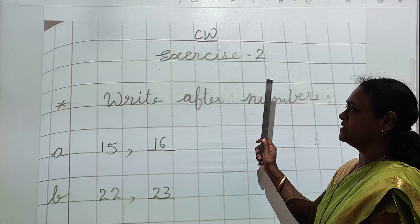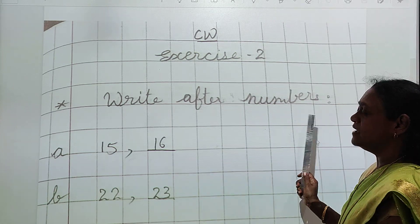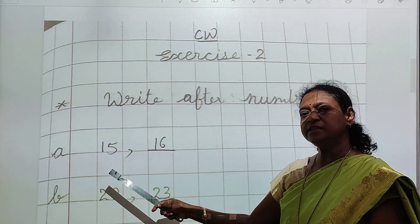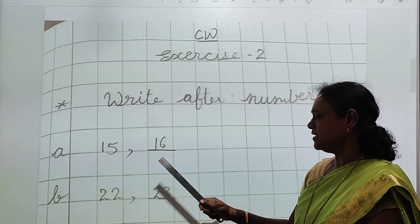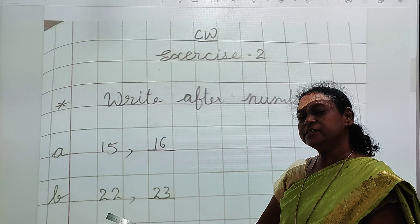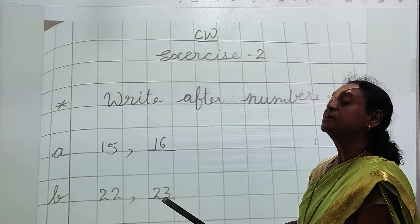Now this is second exercise. Write after numbers. What I have written? 15. 15 ke baad kya aata hai? 16. Okay children? This is 22. 22 ke baad kya aata hai? 23.